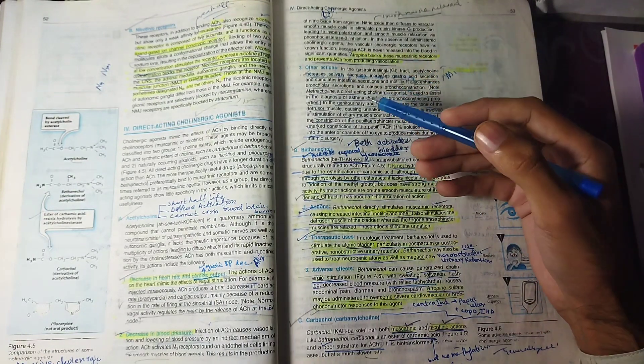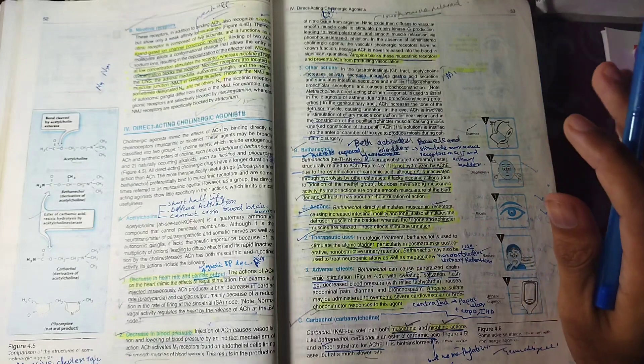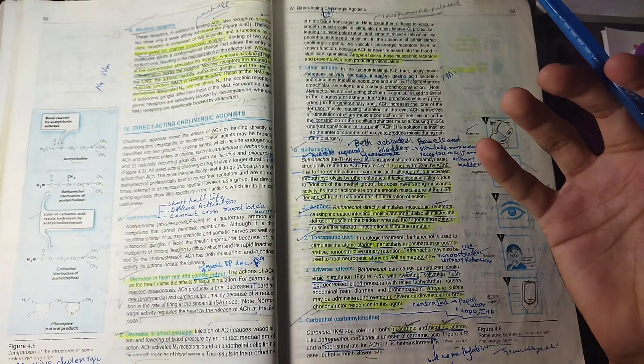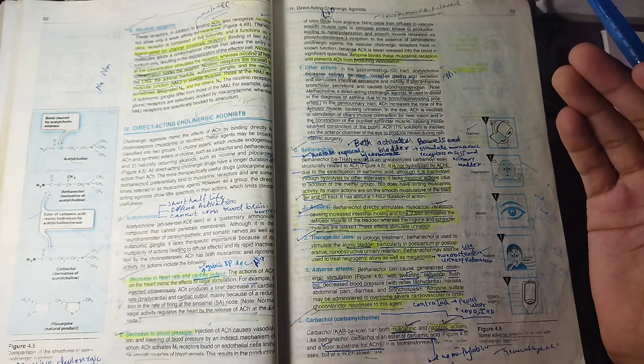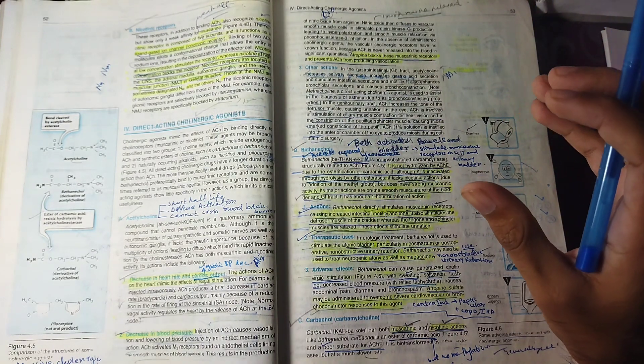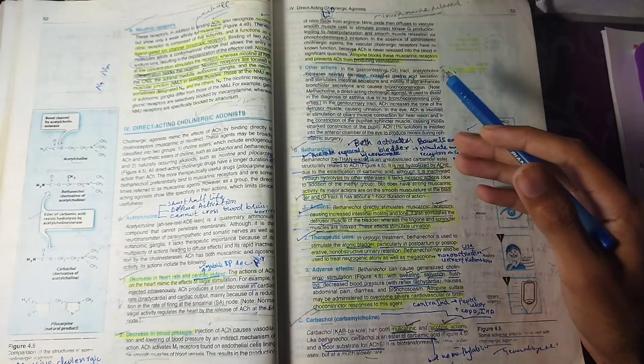After that, acetylcholine will increase peristalsis in the GI tract and urination. In the eye, it will contract the ciliary muscle for near vision.